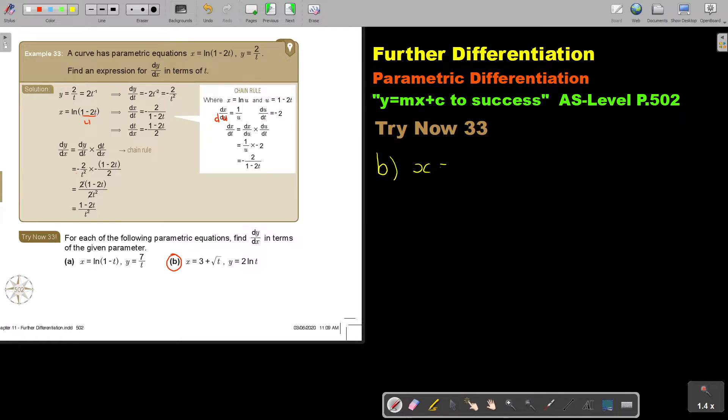So x is equal to 3 plus square root t. And y is equal to 2 ln t. Now, let's just get it correct. So this one, I'm just going to rewrite it. So always take it out of the root. Make it an exponent. Then you're going to get dx over dt. Just concentrate a little bit when you write it down. So x is on top, and t is at the bottom.